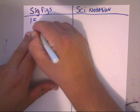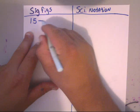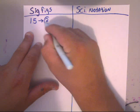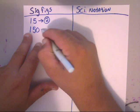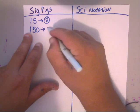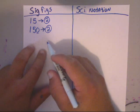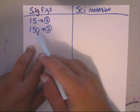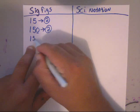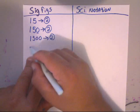Sig figs — let's just start with something simple. Say you have the number 15; there are two significant figures. The number 150 has just two sig figs because this zero is insignificant — it's known as a trailing zero. Zeros that occur at the end of a number are insignificant. So the number 1500 is still just two sig figs.